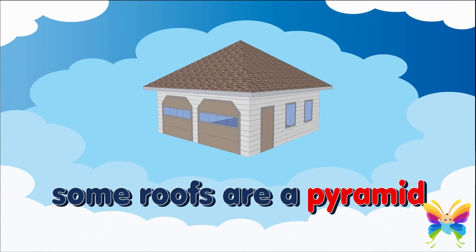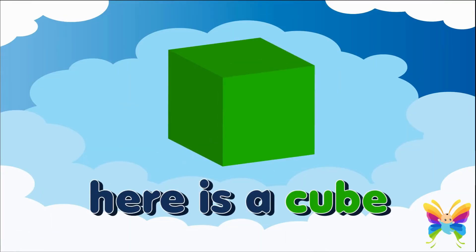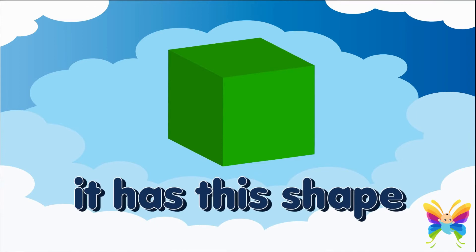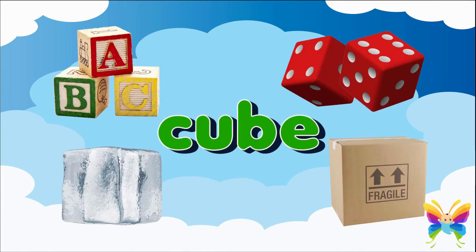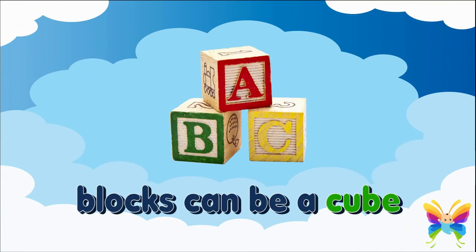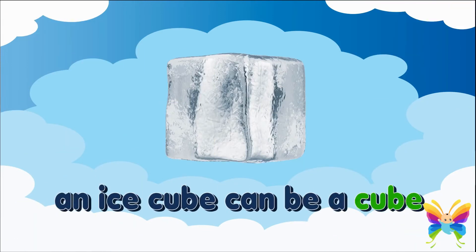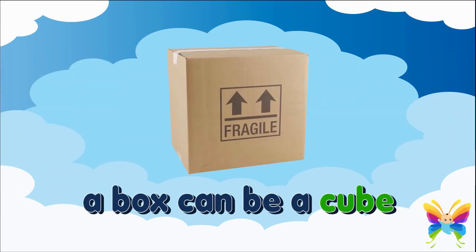Some roofs are a pyramid. Here is a cube — it has this shape. These are things that have the shape of a cube — you can see them every place. Blocks can be a cube, dice can be a cube, an ice cube can be a cube, a box can be a cube.